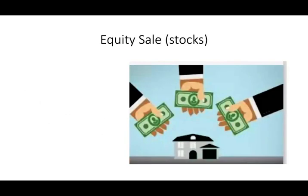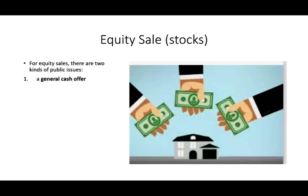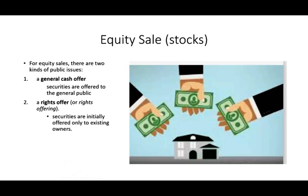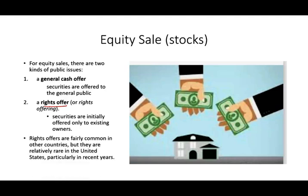If we're selling equity — stocks — there are two types of public issues. A general cash offer, where securities are sold to the general public, or a rights offer. In a rights offering, securities are initially offered only to existing shareholders. Rights offers exist when the company already exists; the company must ask their own shareholders if they're interested in buying stocks before selling to the public. Rights offers are fairly common in other countries but relatively rare in the US.